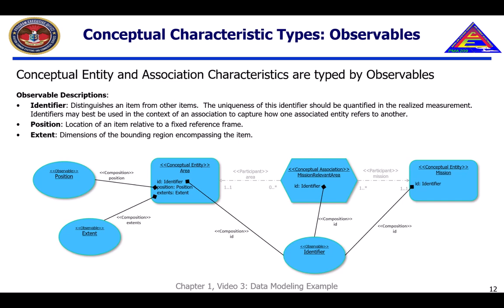Conformance to the FACE standard requires the use of a FACE Consortium-governed shared data model, which is the sole source of the FACE conformance data model observables. The observables shown here, along with their definitions, were all drawn from the FACE shared data model for FACE 3.1, which was current at the time these examples were authored.